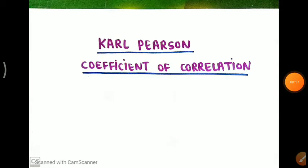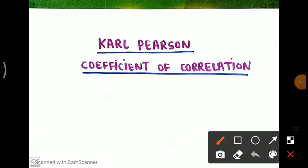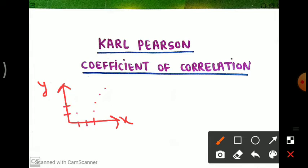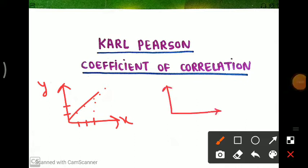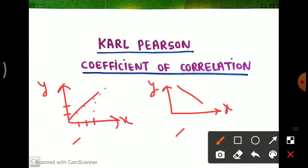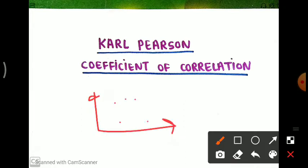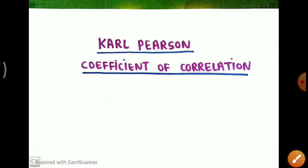So let's start. Karl Pearson coefficient of correlation explains the relation between two variables X and Y. If there is an increment in X and Y also increases, it is known as positive correlation. If the value of X decreases with increasing Y, it is known as negative correlation. If you can't say anything definitive about their relationship, then we say there is no correlation.